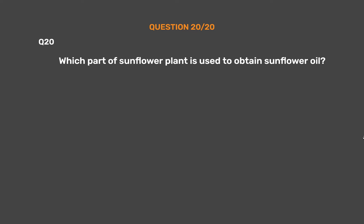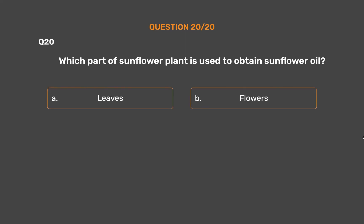Question number 20. Which part of the sunflower plant is used to obtain sunflower oil? Option A, Leaves. Option B, Flowers. Option C, Seeds. Option D, Roots.